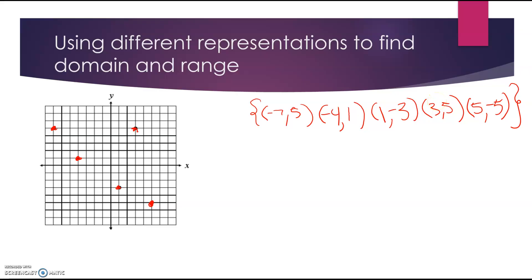So from here, I can easily do my domain and my range. Notice my domain, negative 7, negative 4, 1, 3, and 5. The reason they're already in order is because I went from left to right on my graph. Okay, range. I have negative 5, then negative 3, then 1, and then 5. Again, I don't need to list 5 again, even though it's repeats.